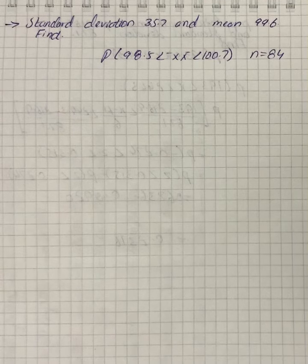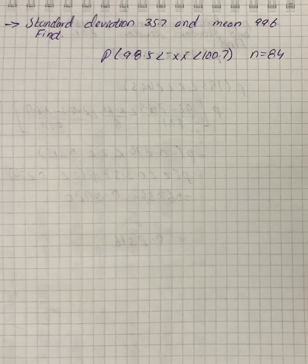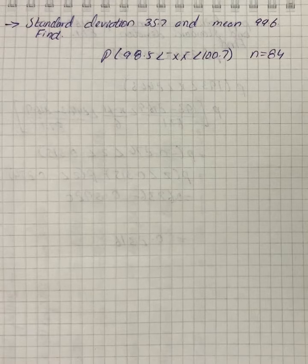So here we have a question with standard deviation 35.7 and mean 99.6. We have to find the required probability that a sample of size n=84 is randomly selected with the mean between 98.5 and 100.7.